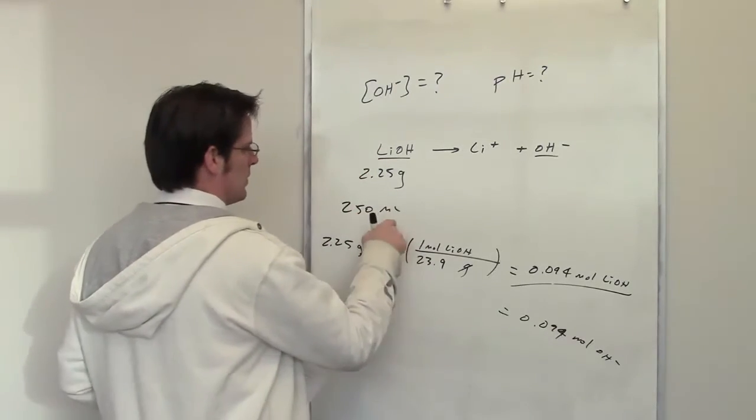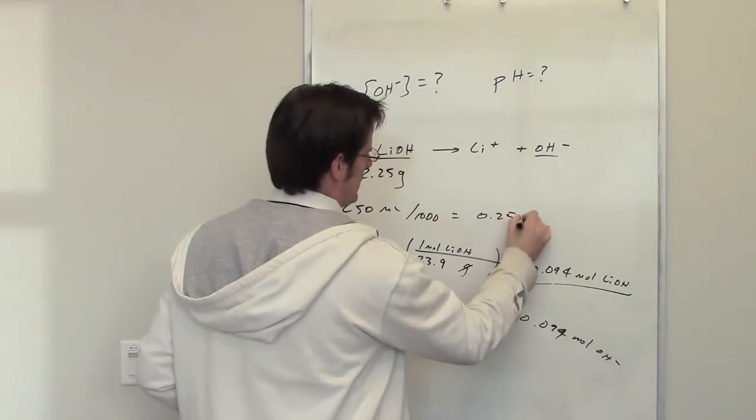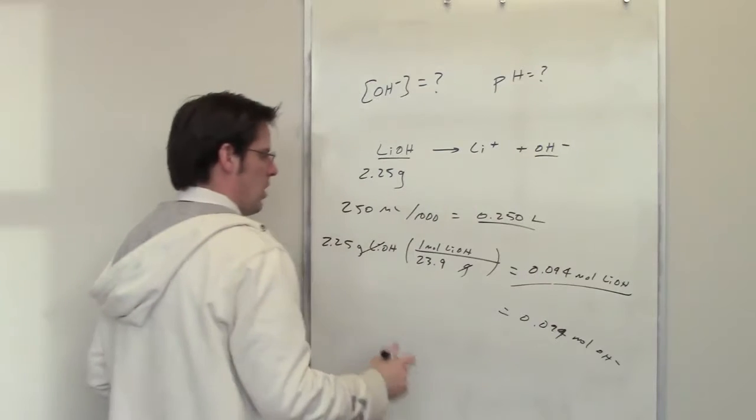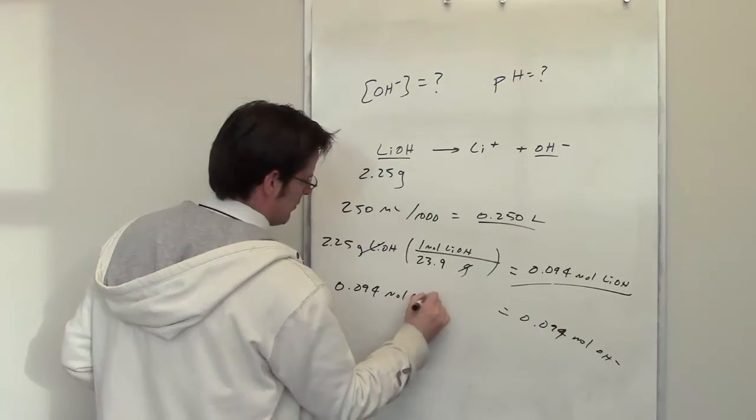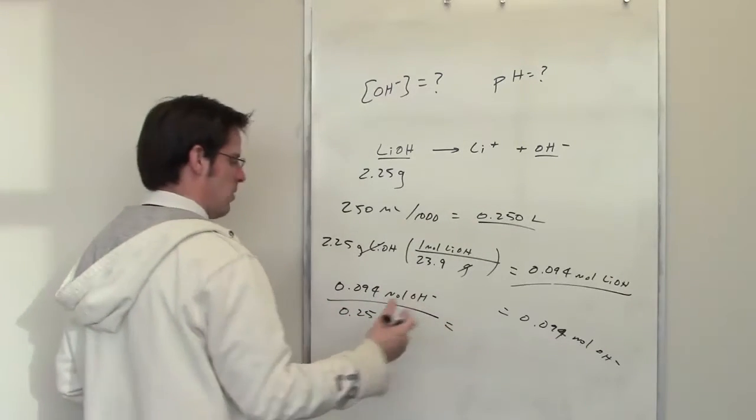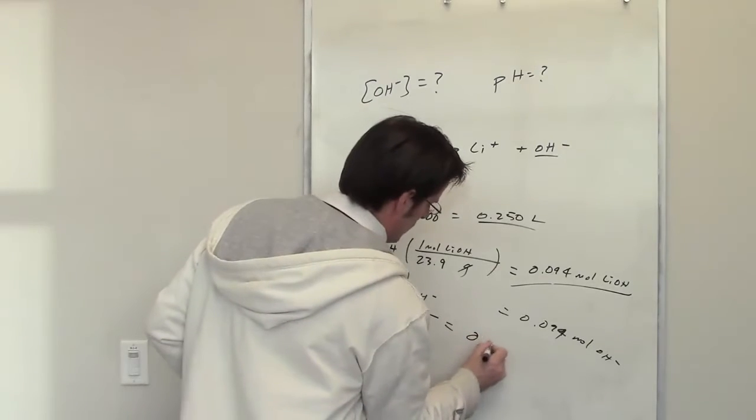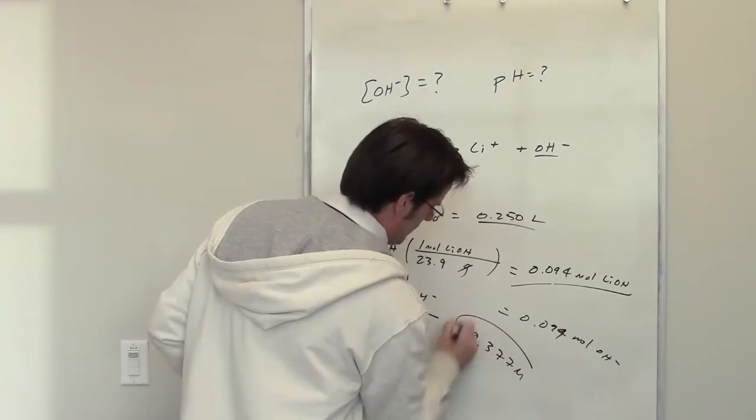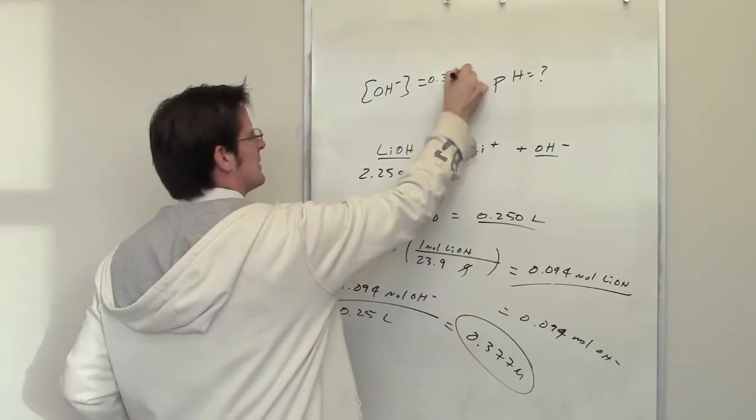How many liters do I have? I've got 250 milliliters. If I divide that by a thousand, that gives me 0.250 liters. So 0.094 moles of hydroxide divided by 0.25 liters tells me the hydroxide concentration. That comes out to be 0.377 molar.